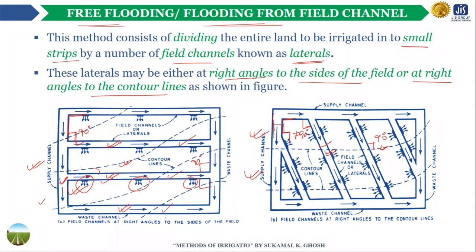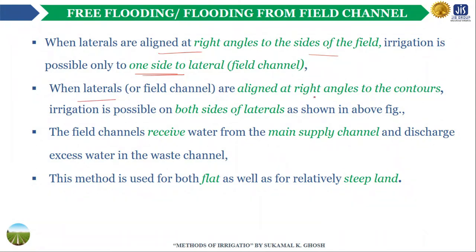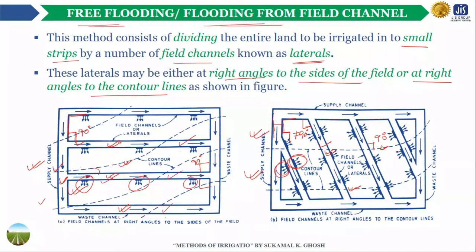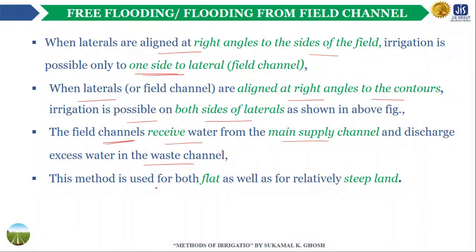When the laterals or field channels are aligned at right angles to the contour lines, the outlets can be provided on both sides of the laterals. The field channels or laterals receive water from the main supply channel and discharge excess water into the waste channel. This method is used for both flat as well as relatively steep lands.